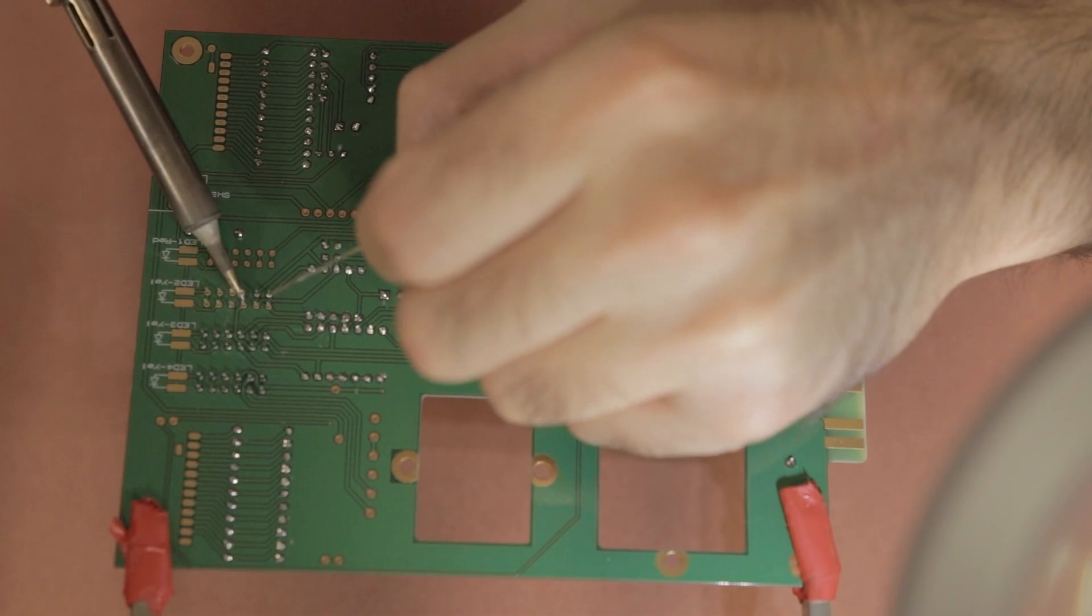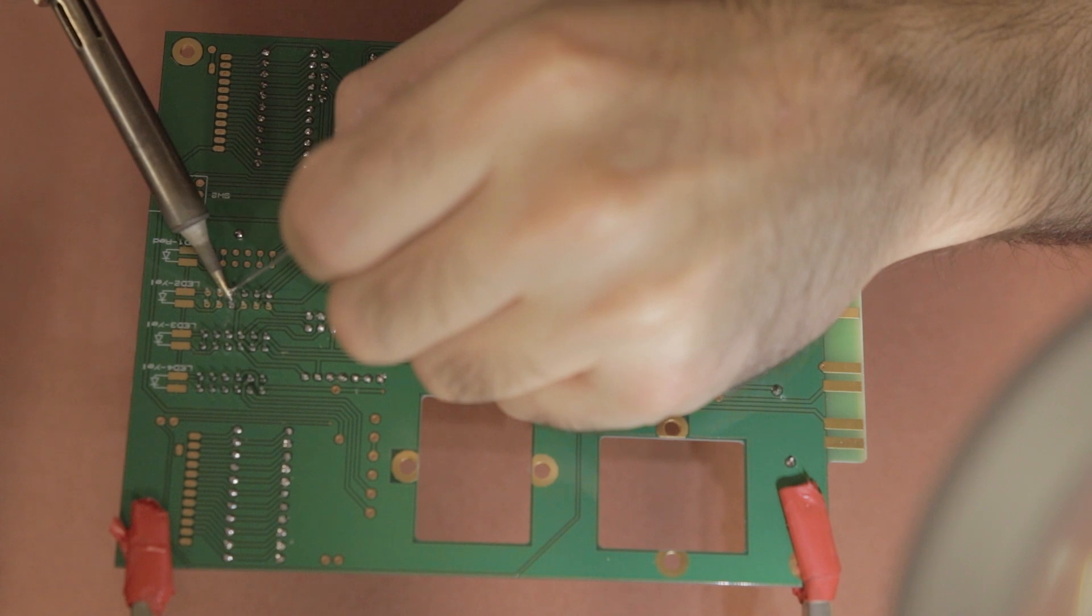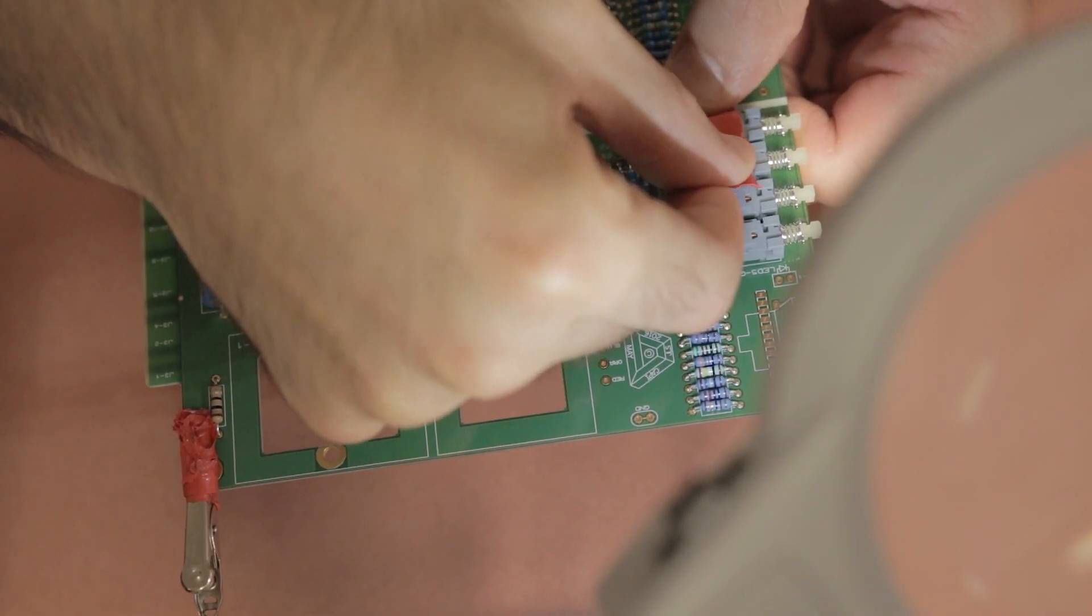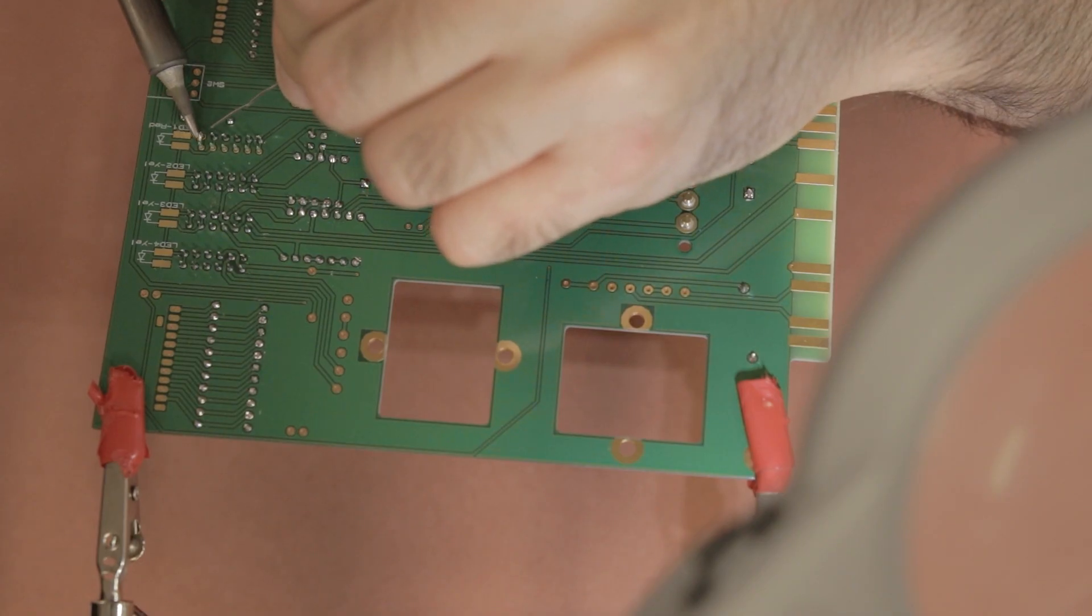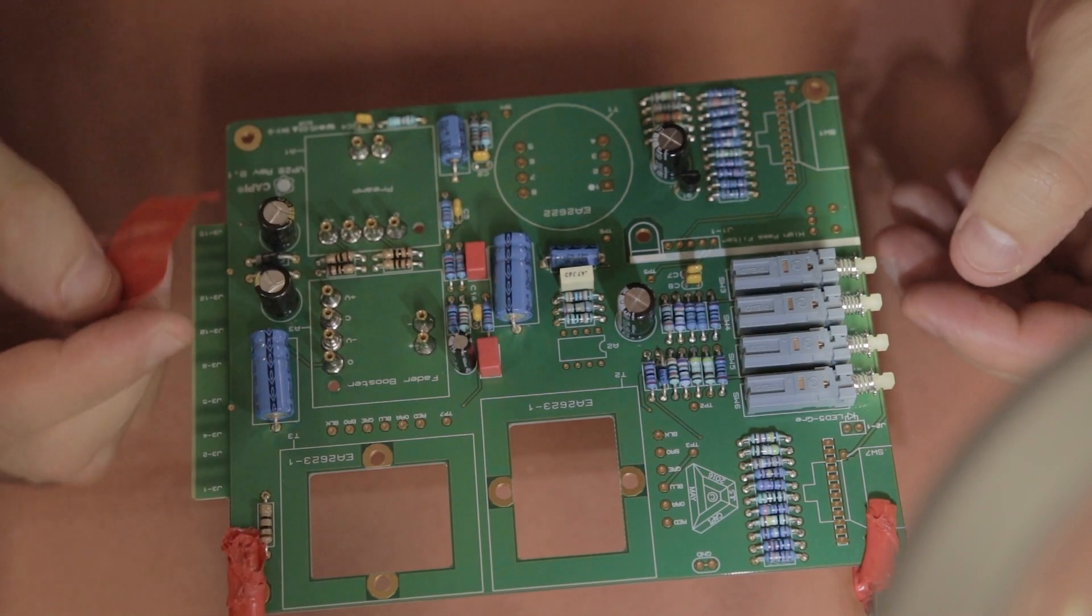If you try and do all the switches at the same time with some tape you might find that some of them don't align properly, so it's better to do them one at a time and just take your time with it and then that's the switches done.